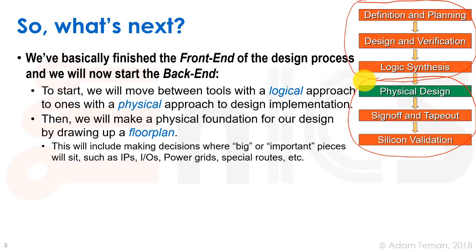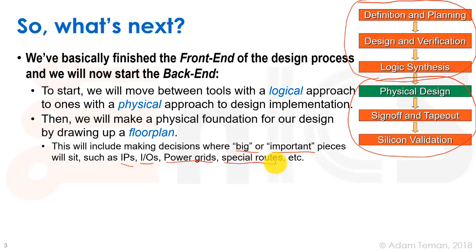To start, we'll move from tools with a logical approach to ones with a physical approach and make a physical foundation for our design. The first thing we do is draw up a floor plan. This includes making what we call big decisions — deciding where things are, such as the IPs, the different input/output circuits, the power grids, the special routes, and so forth.